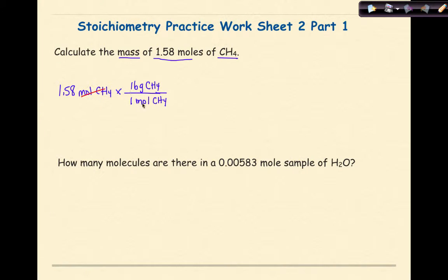So there is 16 grams of CH4 in 1 mole of methane. I want to make sure that my units cancel. So moles cancel moles. They should always cancel down and to the right. And if I work this problem out, it will be 1.58 times 16 divided by 1, which will give me an answer of roughly 25.3 grams of methane.